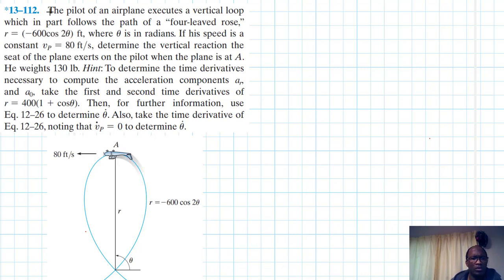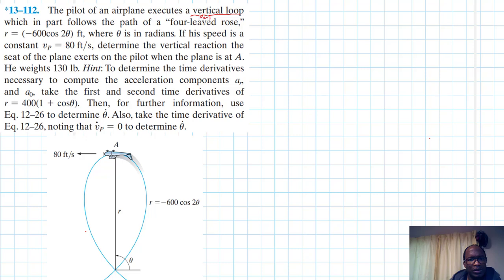Things to take note of: this is in a vertical loop, so this is in the vertical plane. Let's draw the free body diagram.